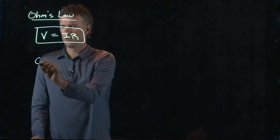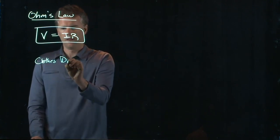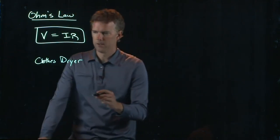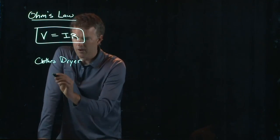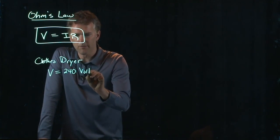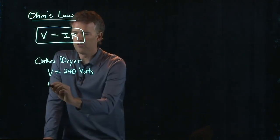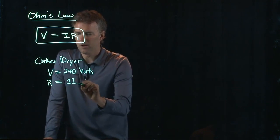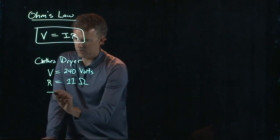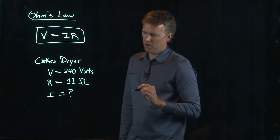Let's try your clothes dryer. You have an electric clothes dryer at home. And let's ask the question, how much current is going to go through the clothes dryer? Now, electric clothes dryers are typically run off of the 240 volt supply, and the resistance is on the order of 11 ohms. And let's ask the question, what is the current that's going to your clothes dryer?